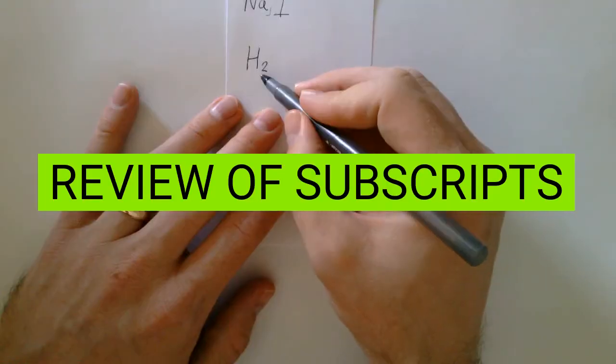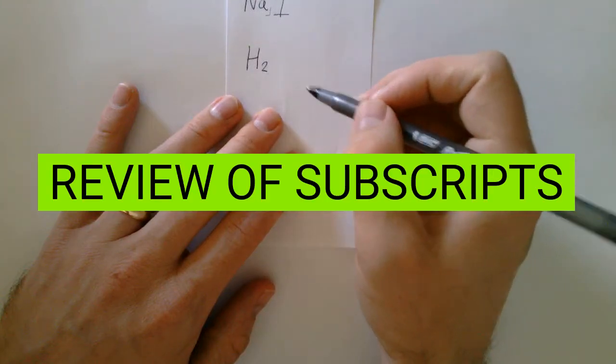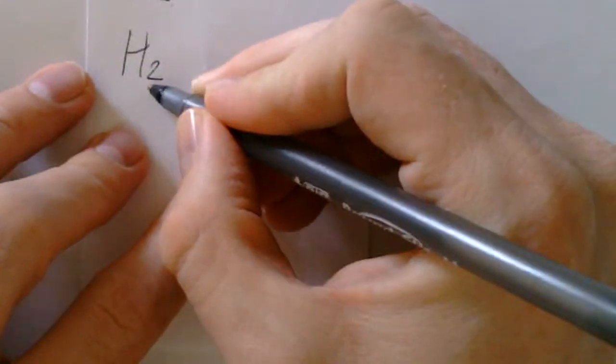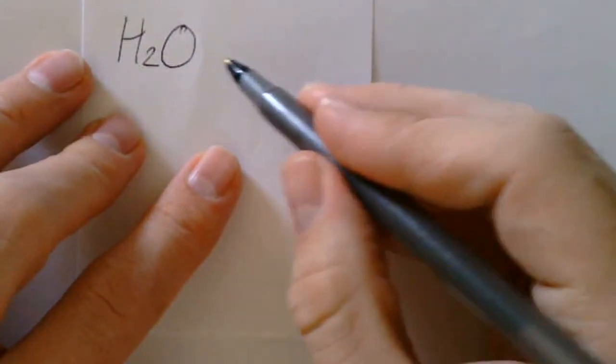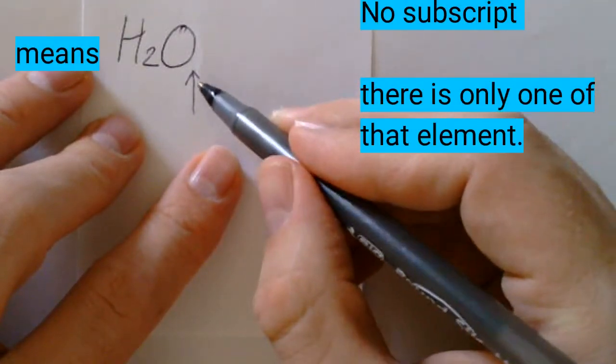So as a quick review, H2 says that there's two hydrogens bonded to each other. And H2O says there's two hydrogens bonded to each other and to oxygen. The lack of a number, the fact that there's no number written there means that there's one.